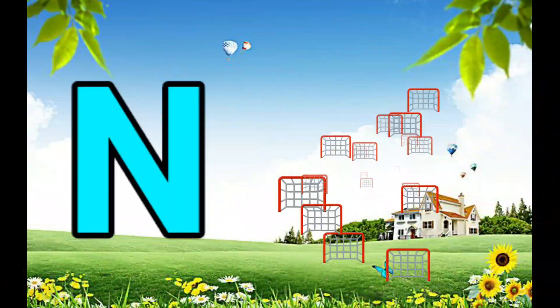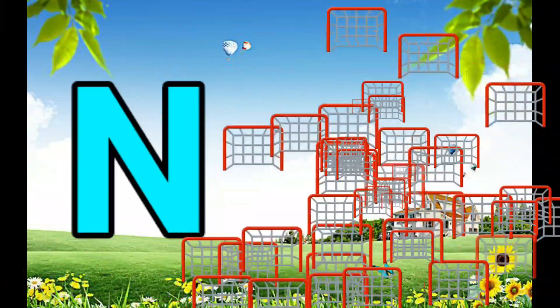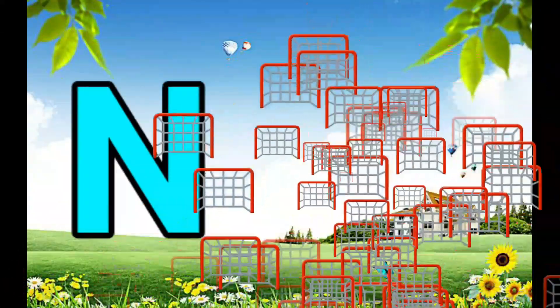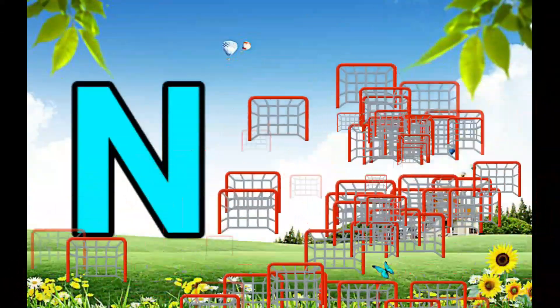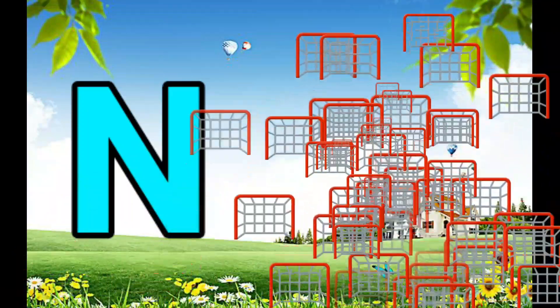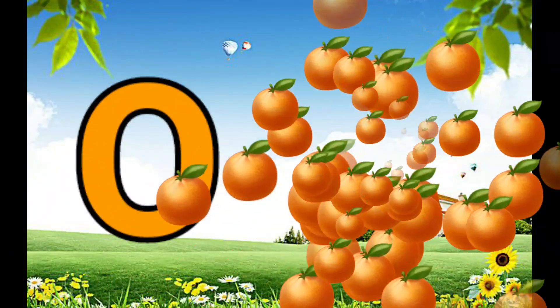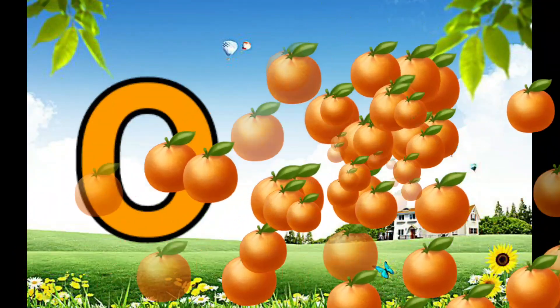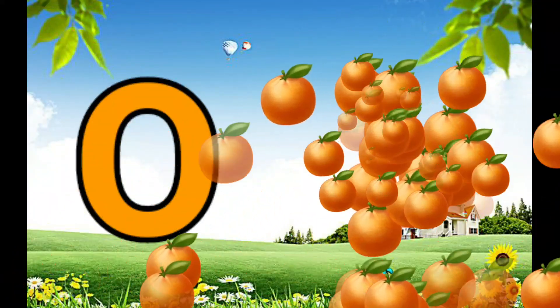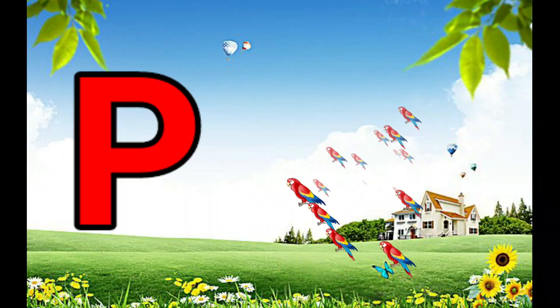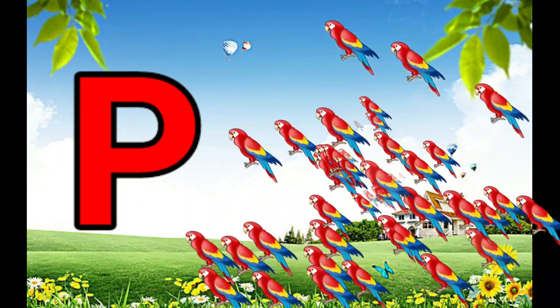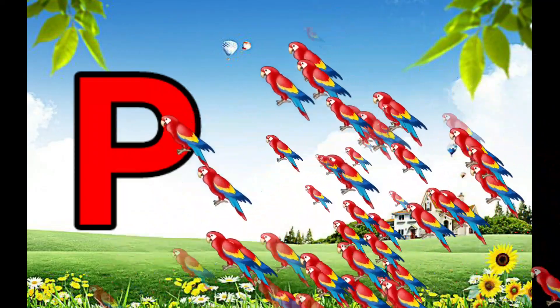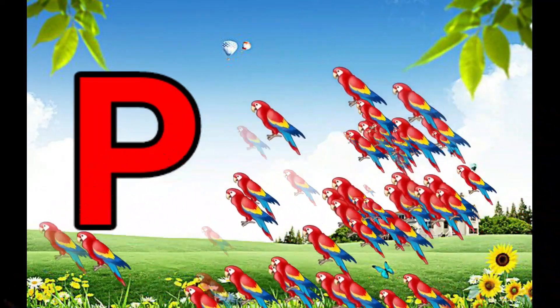N is for Net, N-N-Net. O is for Orange, O-O-Orange. P is for Pet, P-P-Pet.